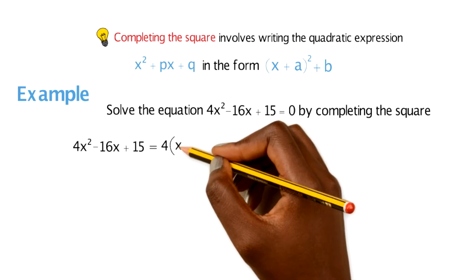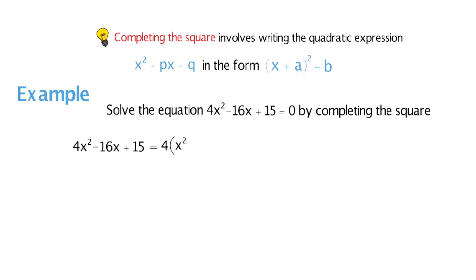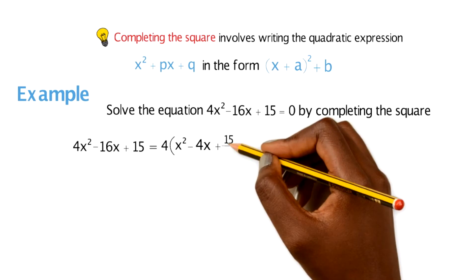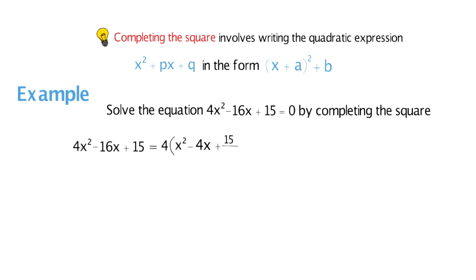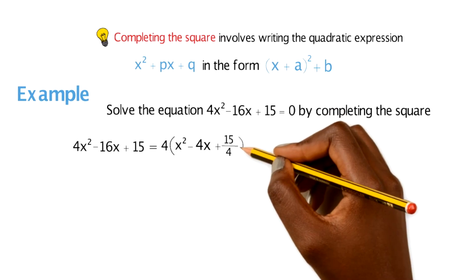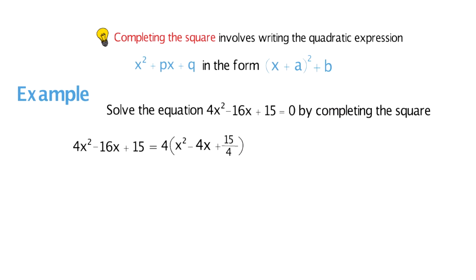The reason why is because if you look at the completing the square format at the top in blue, notice there's no value next to x inside the brackets. So if you ever have a constant in front of your x squared, you want to divide the whole quadratic formula by that number. This leaves us with x squared minus 4x plus 15 over 4 — I've left it as a fraction because it's easier than dealing with decimals.